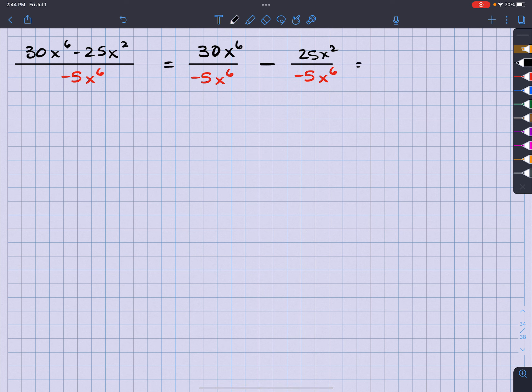So what we're going to have here is, let me see, 30 divided by negative 5 gives me negative 6, right? And then x to the 6th, x to the 6th cancels out. Awesome.